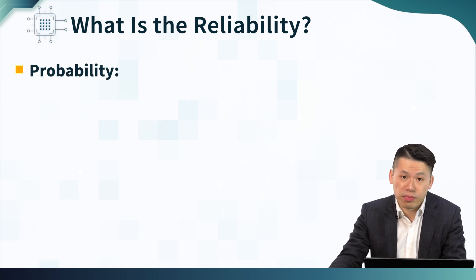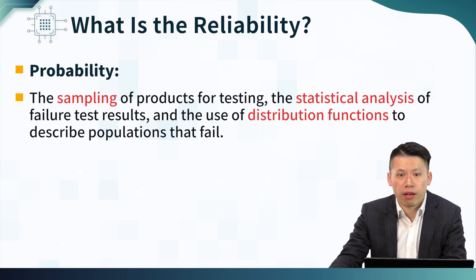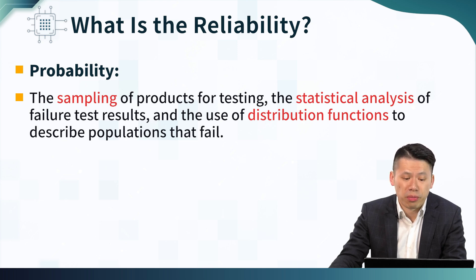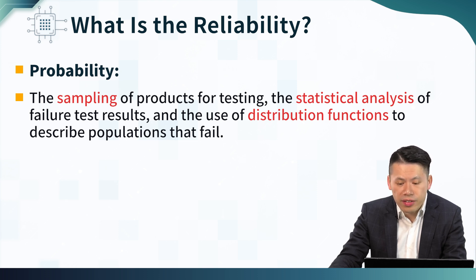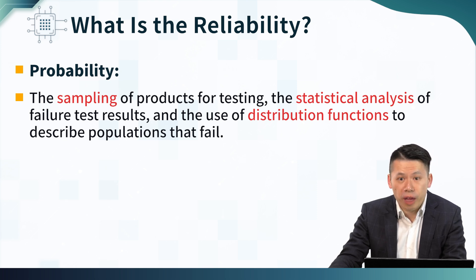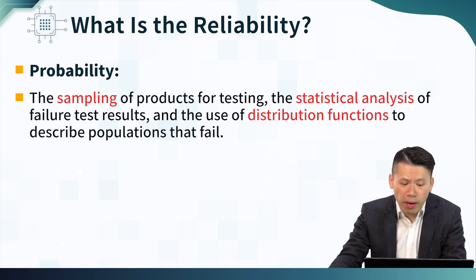What does probability mean in this context? We all learned basic probability in high school and college, but in the engineering context, when we try to apply probability to analyze reliability, we have to review again the basic definition. Probability here means sampling a product for testing, performing statistical analysis of failure test results, and using a distribution function to describe the populations that fail. We have to understand basic statistical analysis and apply distribution functions to analyze reliability.